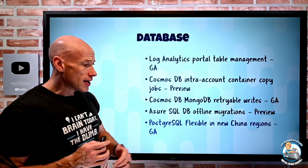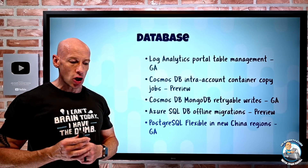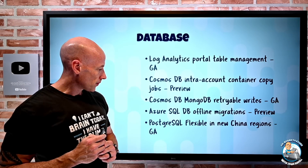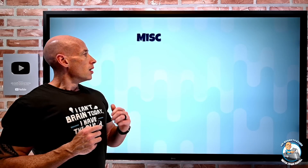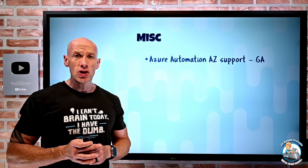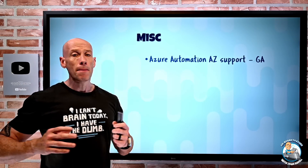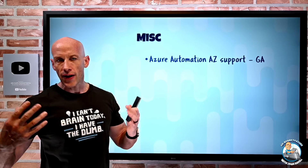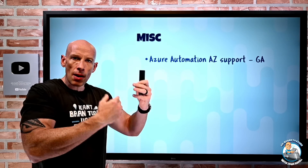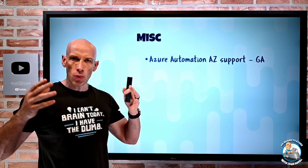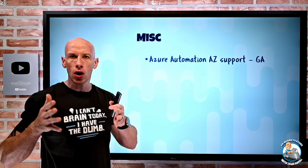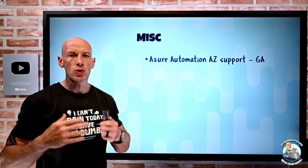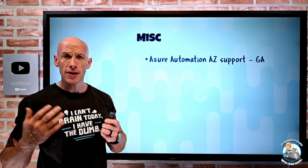PostgreSQL Flexible Server is now available in China North 3 and China East 3. On the miscellaneous side, Azure Automation now supports availability zones — runbooks and artifacts will now be in multiple availability zones, so if there's a localized failure, your automations will still run and function.